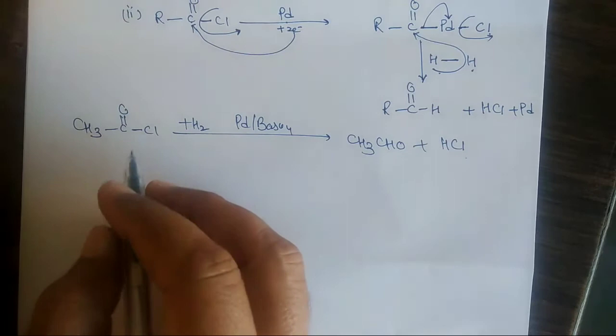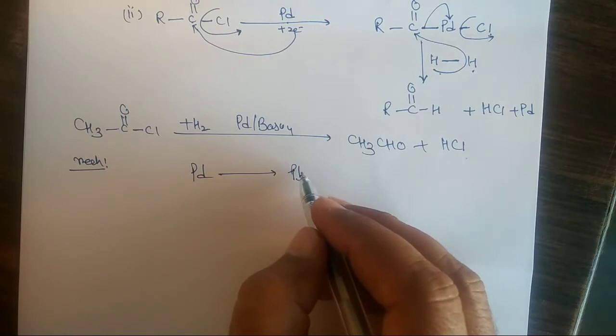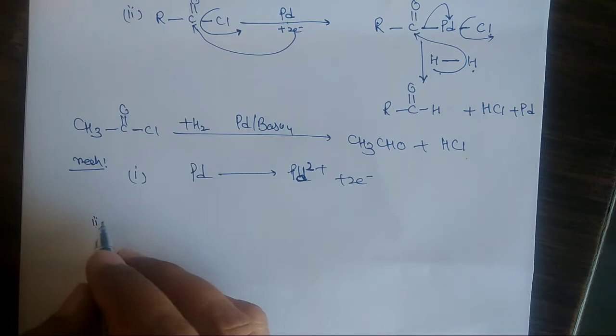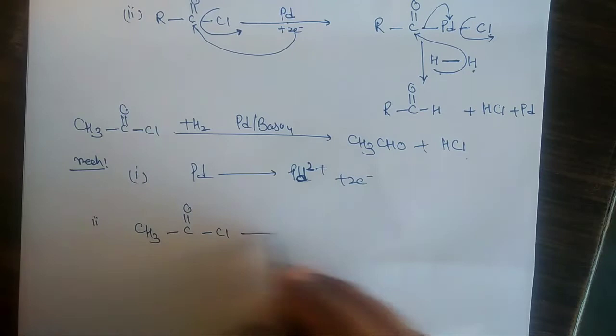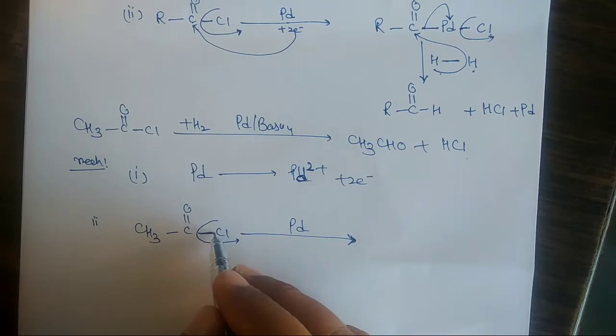Now the mechanism of this reaction is the same. We start with Platinum donating electrons to give Platinum(II) two positive — this is the first step of the mechanism. The second step is CH₃ C double bond O and Cl with Platinum addition to the carbon, where carbon is more active and the electrons are donated from Platinum.